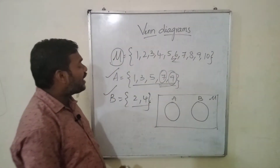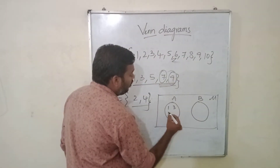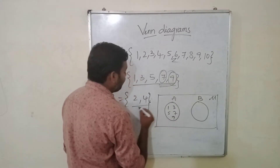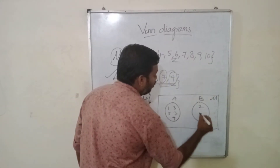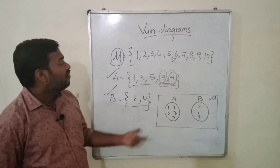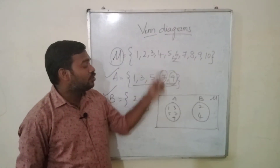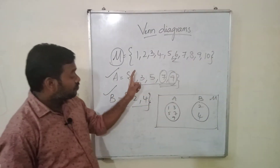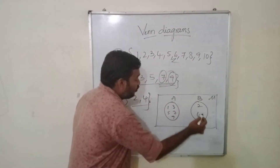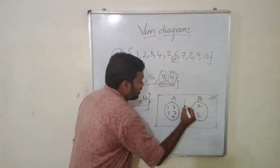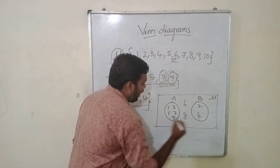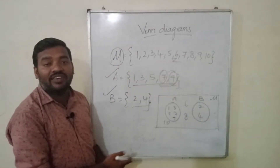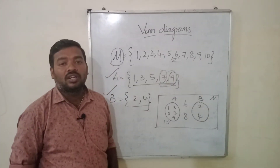You can directly write set A as 1, 3, 5, 7, 9 and set B as 1, 4. Next, we have other elements in the universal set: 1, 2, 3, 4, 5, 6, 8 — you can write them anywhere but they should be visible.